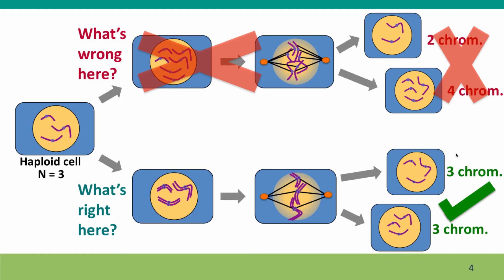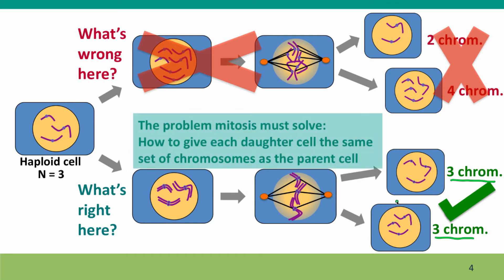Here's the slide from the previous lecture where we clarified what mitosis has to accomplish. If things go wrong, the daughter cells end up with different numbers of chromosomes than each other, and most importantly, different numbers of chromosomes than the parent cell. When mitosis is done right, the daughter cells have the same number of chromosomes and the same kind of chromosomes — the same homologues — as the parent cell. So the problem that mitosis must solve is how to give each daughter cell the same set of chromosomes that the parent cell has.